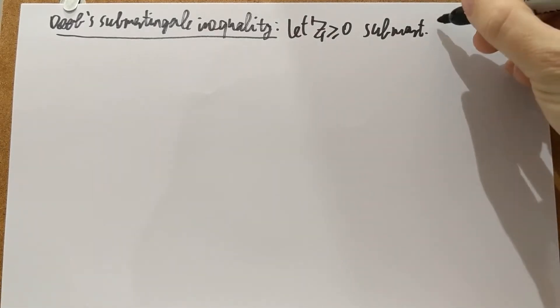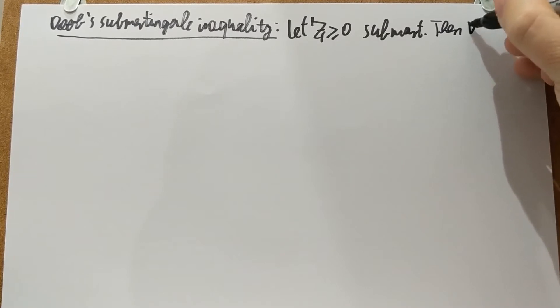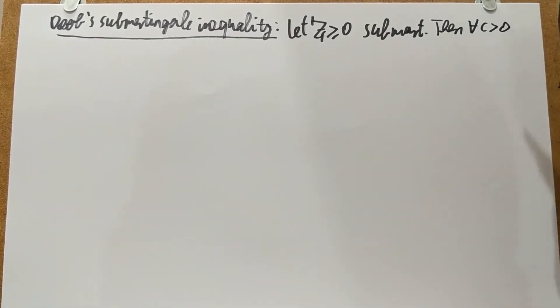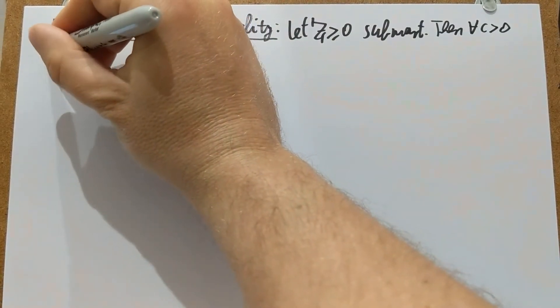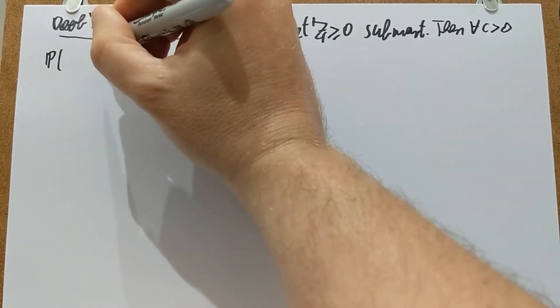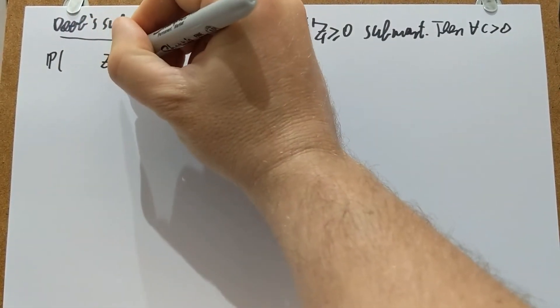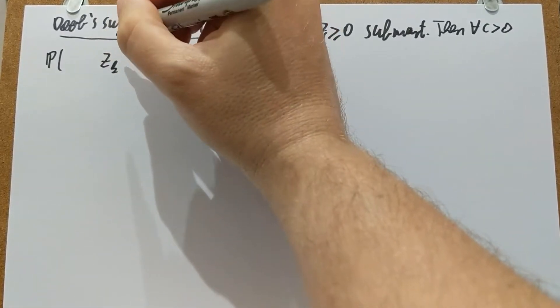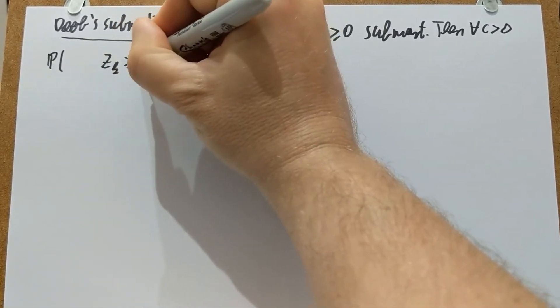So then, fix any positive real number, not random, any positive C. We have the following, and I'm going to write this up in a funny way. I'm going to just start off with P(sup Z_k ≥ C) smaller than or equal to E(Z_N)/C.